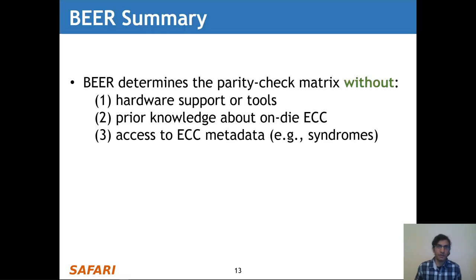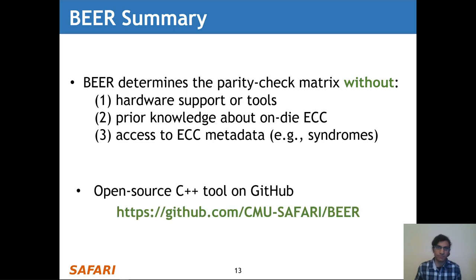In summary, BEER determines the parity check matrix without hardware support or tools, prior knowledge about on-die ECC, or access to ECC metadata, for example, error syndromes. Finally, we open source BEER as a project on GitHub at the link shown on the slide.